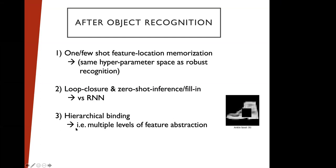Time permitting, another idea is bringing in hierarchical binding ideas from my PhD work. The features so far are derived from the max pooling layer, but there could be multiple levels of abstraction. The max pooling level features might be better for object recognition while lower-level features would do a better job with image reconstruction. There's even a possibility of bringing in displacement cells as a way of mapping between these levels of feature abstraction.